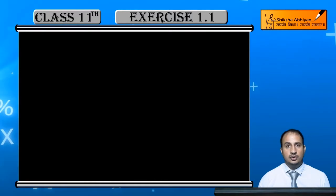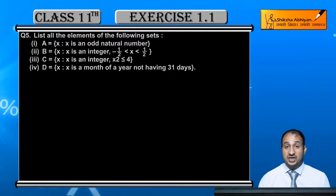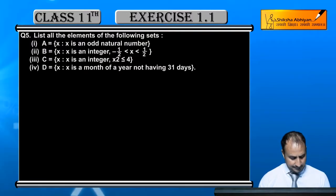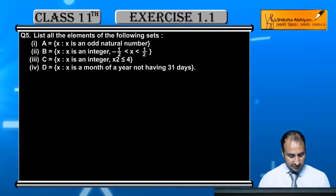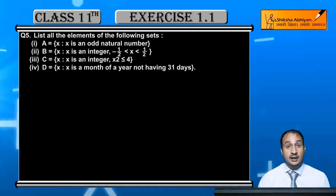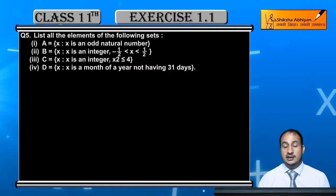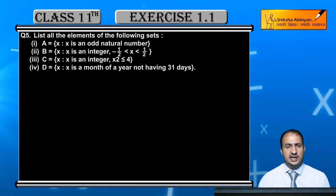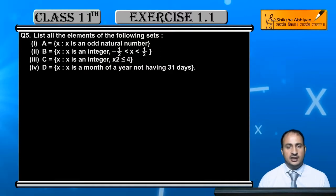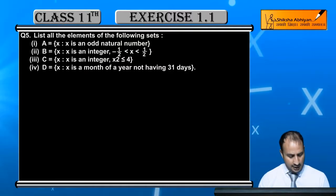Now students, question number 5. List all the elements of the following sets. Here you can see some sets which are in set-builder form. You can simply write them in roster form.